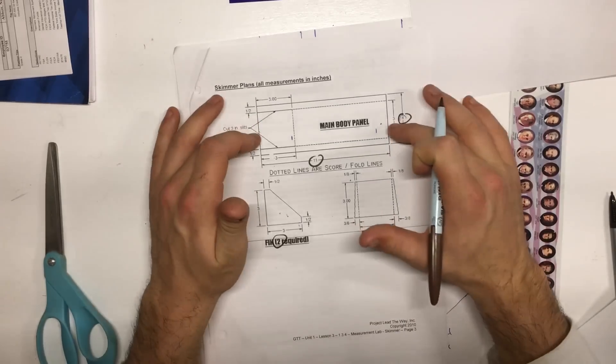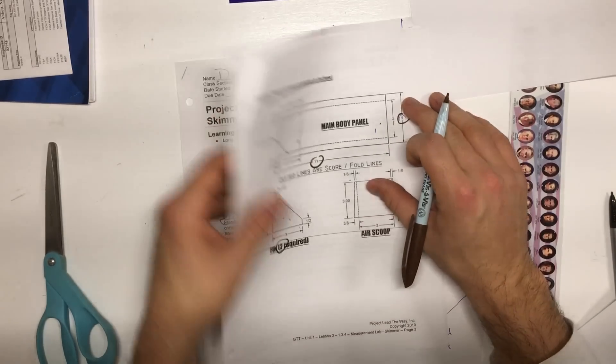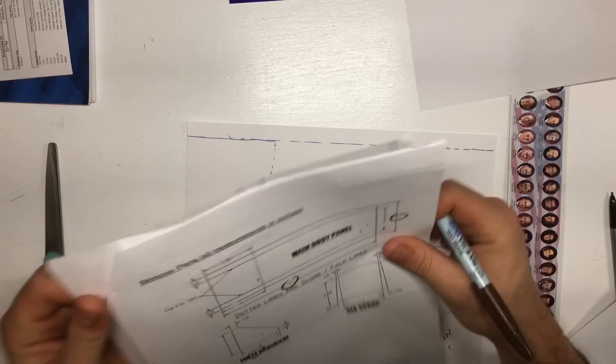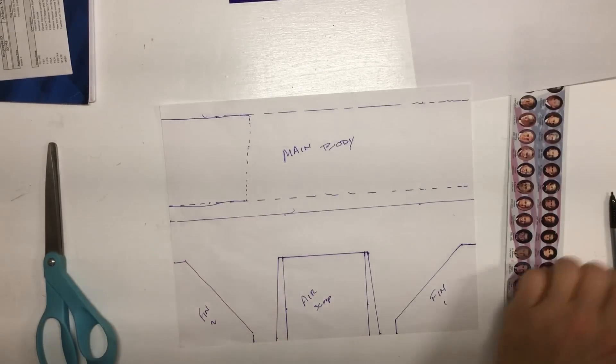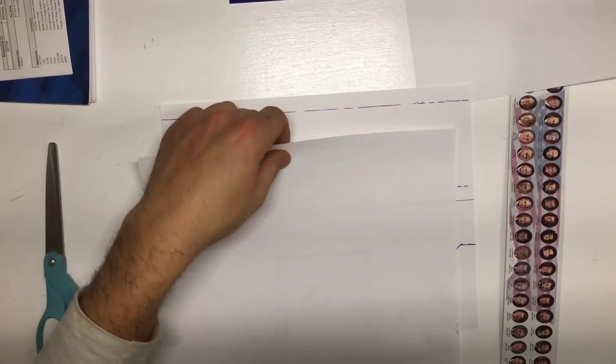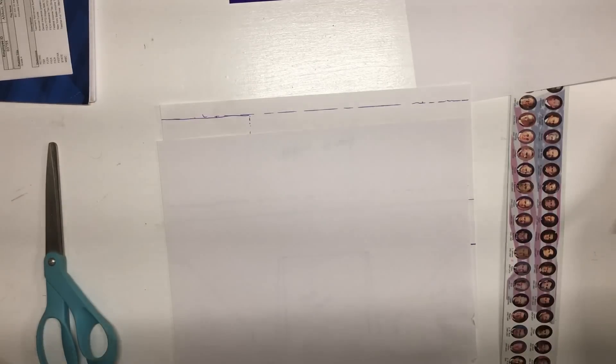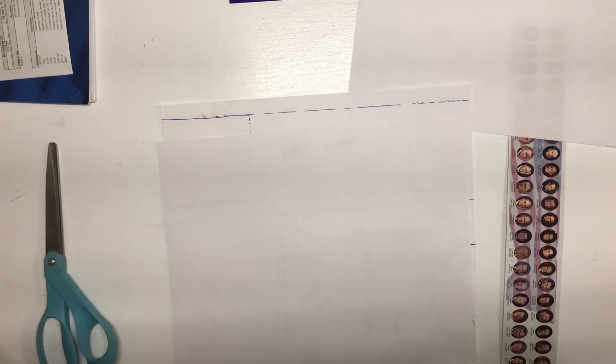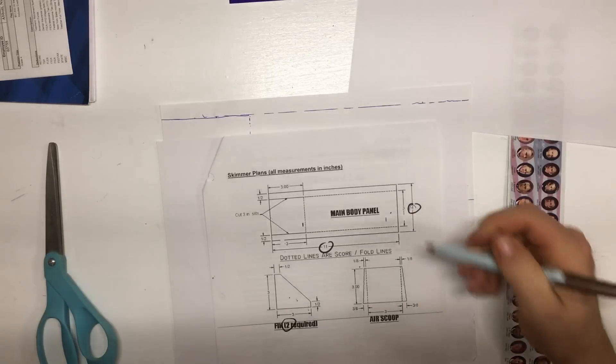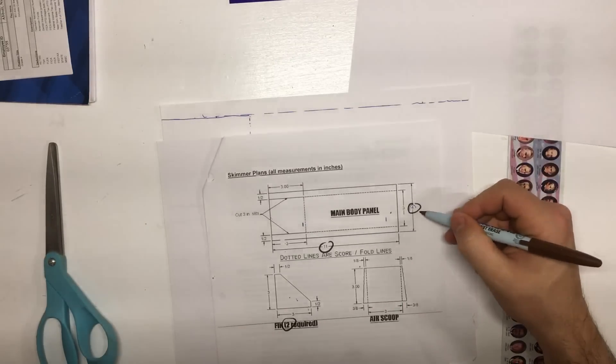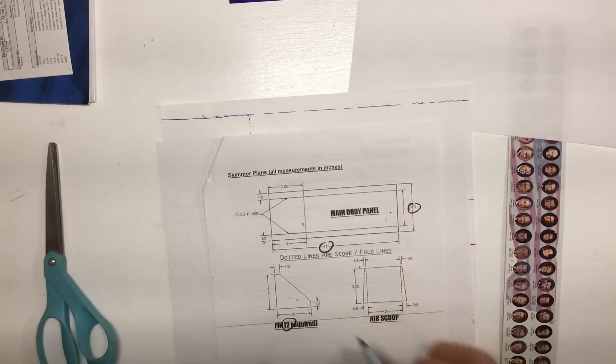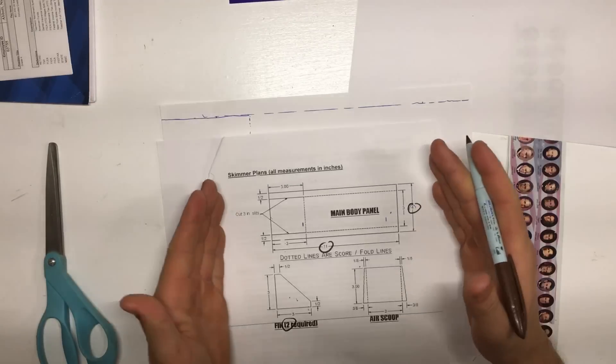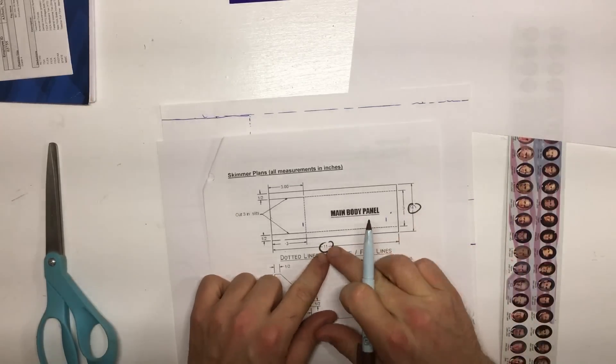Now, we're going to start by drawing the main body panel. And what our end goal is, it's going to look like something like this. Okay, so I'm going to take a minute here and I'm going to start drawing this. Now, you'll notice that in our cut sheet or our layout, we identify that it's 4 inches by 11 inches. I know that a white sheet of paper is 8 1⁄2 by 11, so I'm going to use that to my advantage there.